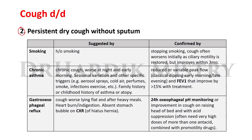For persistent dry cough without sputum, the first cause is smoking. When patients stop smoking, the cough often worsens initially, but as ciliary motility is restored, it improves within three months. Chronic asthma is suggested by chronic cough that worsens at night and early morning, seasonal variation, specific triggering factors such as aerosol sprays, cold air, perfumes, smoke, and exercise, and a family or childhood history of asthma or atopy.